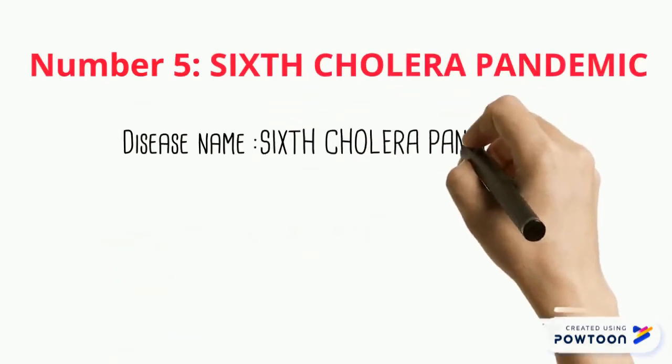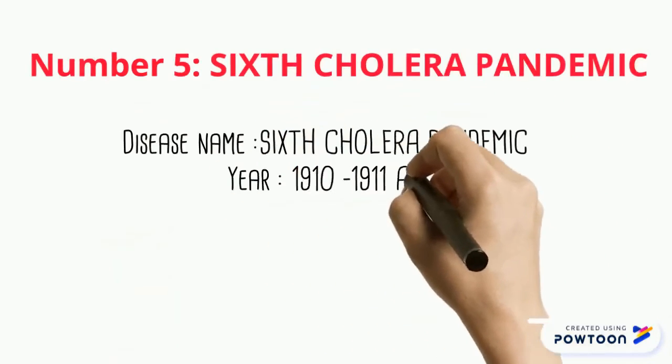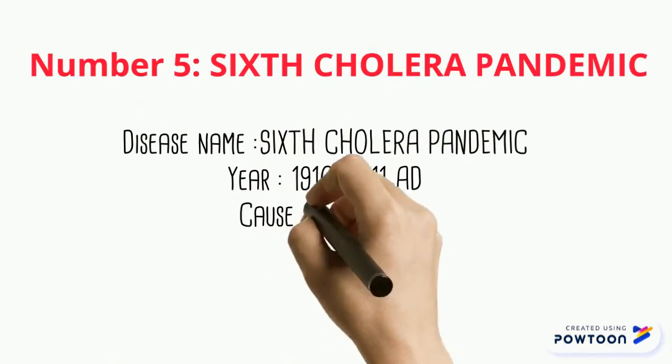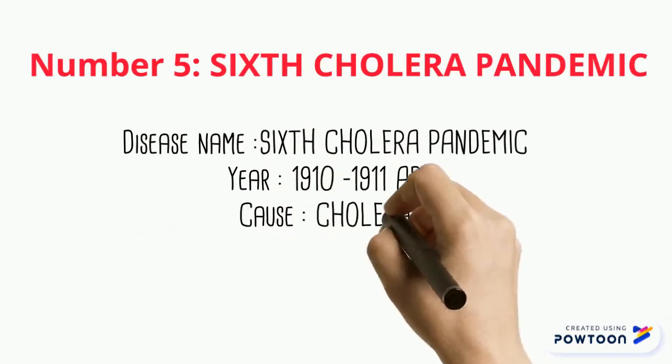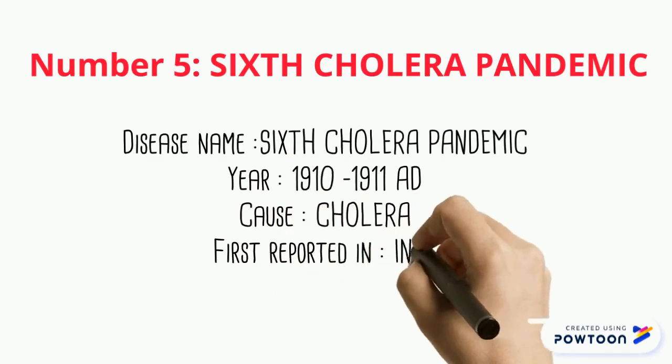Number 5 is the Sixth Cholera Pandemic, which originated in India where it killed over 800,000 people before spreading to the Middle East, North Africa, Eastern Europe, and Russia in the years 1910 to 1911.